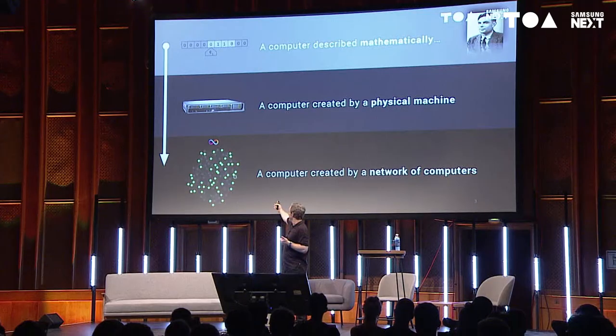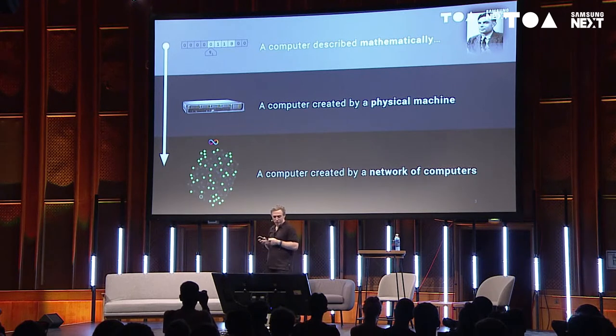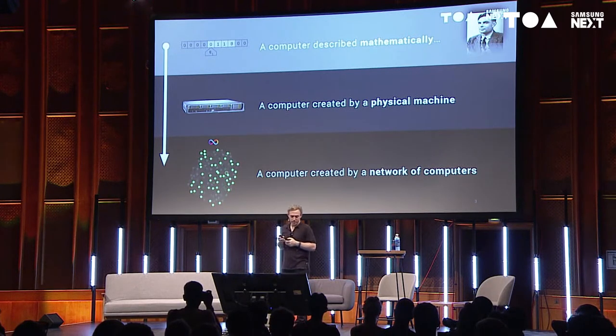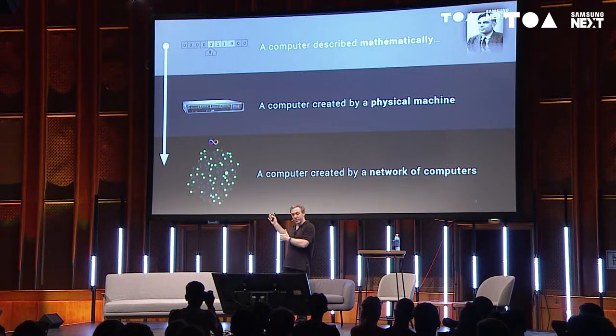What's interesting is that a computer can also be created from a network of computers. That's what this thing here is — it's actually a recording of the DFINITY network, or a small configuration of the DFINITY testnet. You can see there are lots of dots, and each dot represents a different computer connected together over the internet to produce one larger computer.